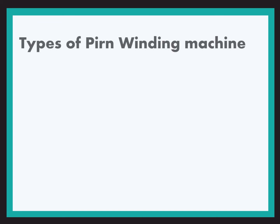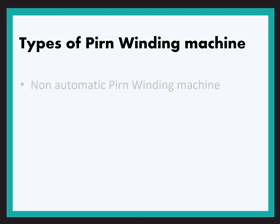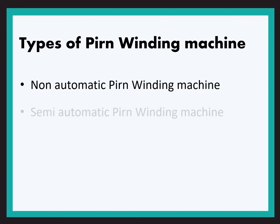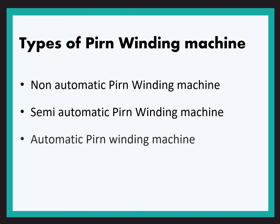Now let us see the types of pern winding machines. The first type is the non-automatic pern winding machine, where the changing of the pern — that is, replacement of a full pern by an empty pern — is done manually. The next is the semi-automatic pern winding machine, where the pern is donned manually but doffed automatically. In the automatic pern winding machine, both donning and doffing are done automatically.